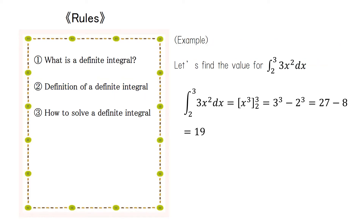Next, let's actually try to find the definite integral. One of the definite integrals of 3x squared is x cubed. And if we substitute in 3 for the upper limit of 3x squared, we get 27. And if we substitute in 2 for the lower limit, we get 8. So the definite integral is 19. This is how we use indefinite integrals and definite integrals to find the difference in values.